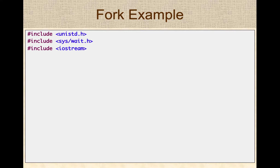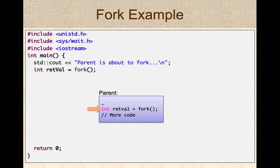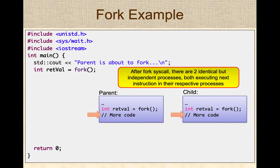Let's look at fork through an example. These are the common headers you will include — first one is the UNIX standard or unistd.h, the second one is sys/wait.h, which defines the wait system call used to wait for child processes to finish. In our main method, we're going to have a simple example where the parent process is going to fork. When it calls the fork system call, an identical child process is created, and now you have two processes running — parent and child — running exactly the same program, even though they are independent processes. Both of them will start processing the next instruction in their respective processes.